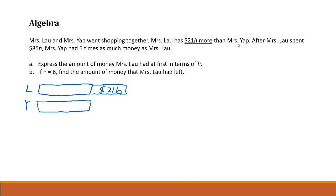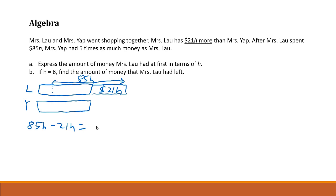Mrs. Lao spent 85h — you can see that 85h is more than 21h. That means Mrs. Lao spends a total of 85h, from here to here on the model. To find the remaining amount, you take 85h minus 21h, which gives you 64h. So the amount of money in this portion of the bar will be 64h.